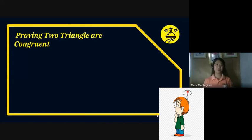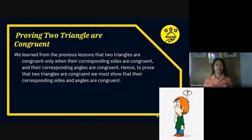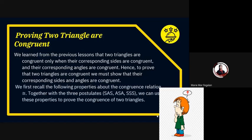We're going to discuss proving two triangles are congruent. We learned from the previous lesson that two triangles are congruent only when their corresponding sides are congruent and their corresponding angles are congruent. Hence, to prove two triangles are congruent, we must show corresponding sides and angles are congruent. We first recall the following properties about congruence relations, together with the three postulates: SAS, ASA, and SSS — where S stands for side and A stands for angle. We can use these properties to prove the congruence of two triangles.